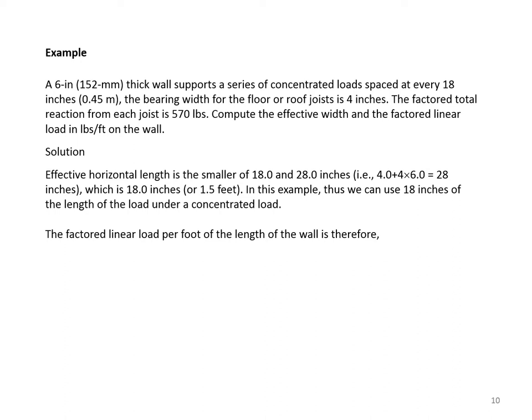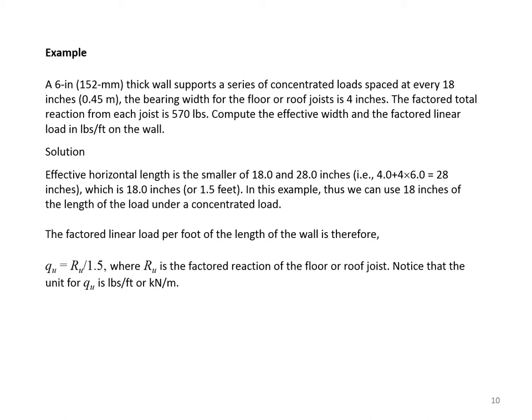The factored linear load per foot of wall length is QU = RU divided by 18 inches, which is 1.5 feet. With RU = 570 pounds divided by 1.5, we get 380 pounds per foot.